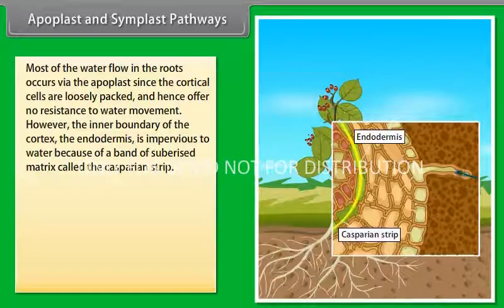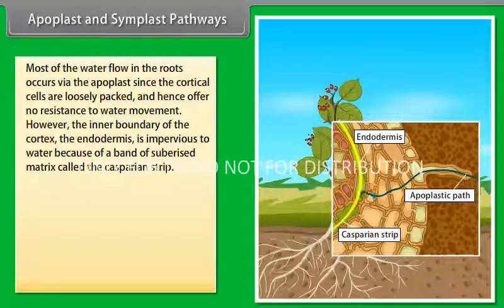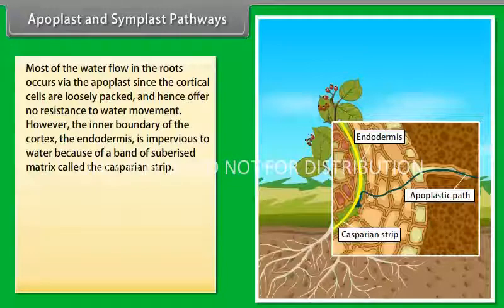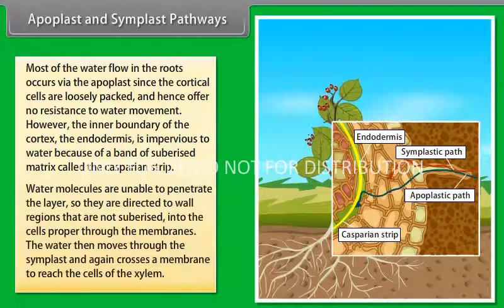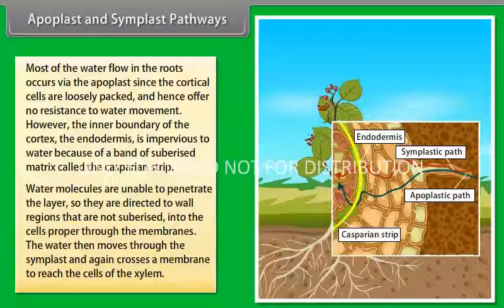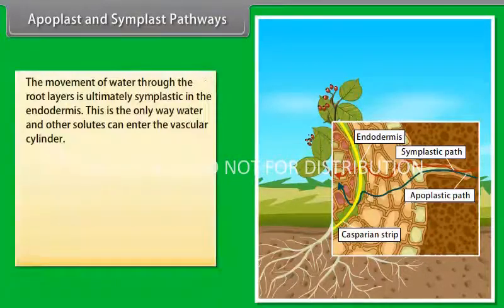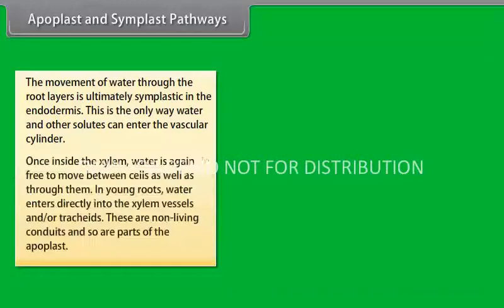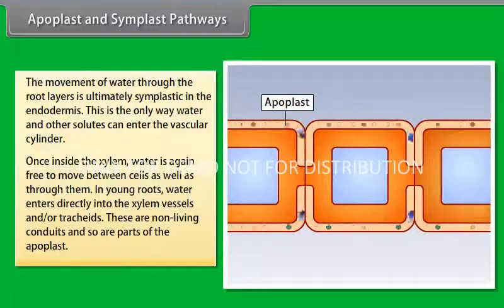Apoplast and Symplast pathways. Most of the water flow in the roots occurs via the apoplast since the cortical cells are closely packed and hence offer no resistance to water movement. However, the inner boundary of the cortex, the endodermis, is impervious to water because of a band of suberized matrix called the Casparian strip. Water molecules are unable to penetrate the layer. So they are directed to wall regions that are not suberized into the cells proper through the membranes. The water then moves through the Symplast and again crosses a membrane to reach the cells of the xylem. The movement of water through the root layer is ultimately Symplastic in the endodermis. This is the only way water and other solutes can enter the vascular cylinder.